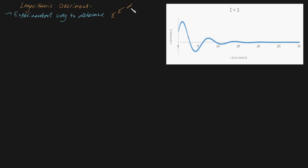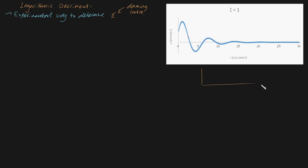So this is our dampening ratio. Now before I get into the definition of delta, and before I get into the mathematics of how to actually derive the formula for logarithmic decrement, let me take a step back and tell you what underdamped motion is again, because it's very crucial to have a good understanding of underdamped motion to understand logarithmic decrement.